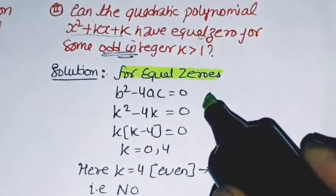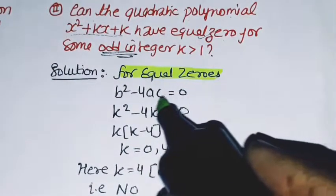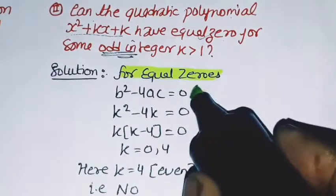If equal zeros or roots exist, then b² - 4ac equals zero.